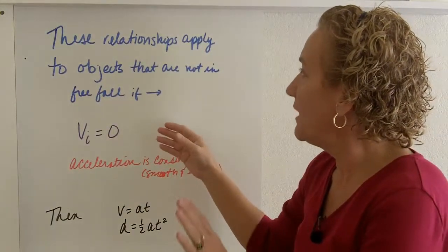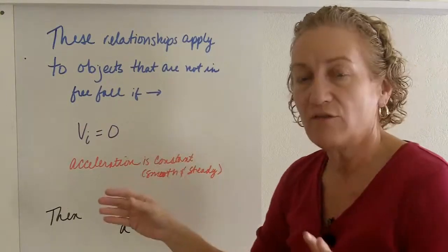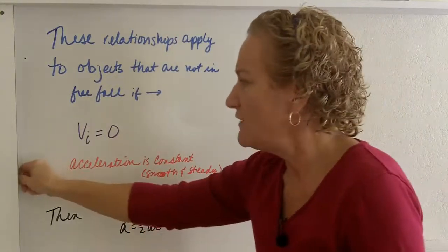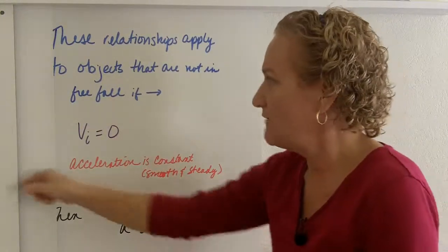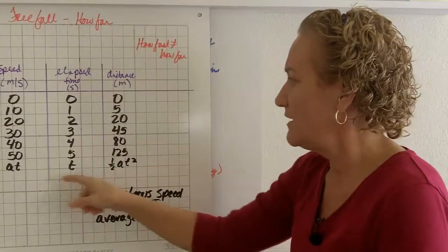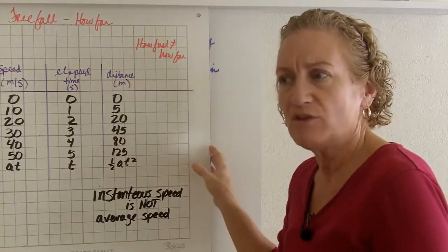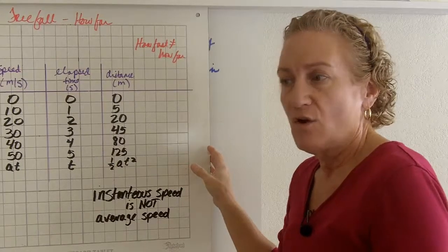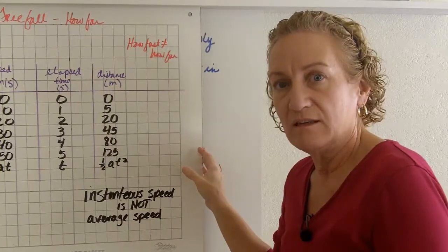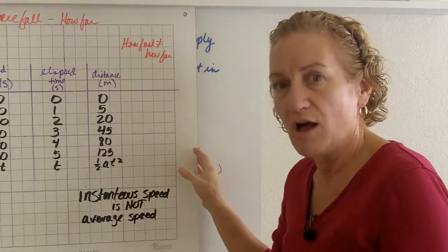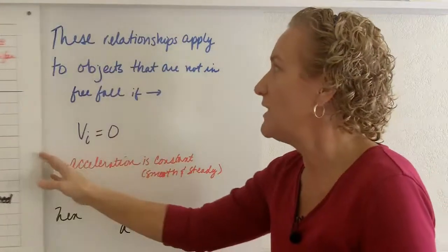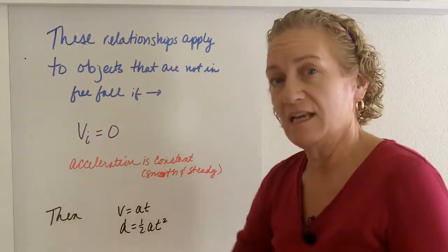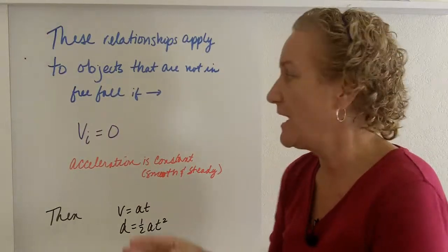So the relationships apply to objects that are not in free fall. Now in other words, we have these equations, right? We have these equations we came up with. So what happens if it's not in free fall? What happens if you're in your car or if you're in an airplane or if you're throwing a ball? Do those same relationships apply? Well they can but not always. And so we're going to talk about when they apply.